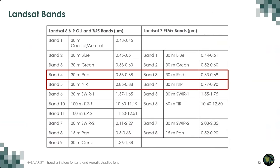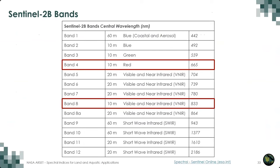When calculating NDVI using Landsat, this figure can be used as a reference to remember which bands to use. For Landsat 8 and 9, use band 4 (red band) and band 5 (near-infrared band). For Landsat 7, it's bands 3 and 4. For Sentinel-2, we often use bands 4 and 8 for the NDVI calculation.